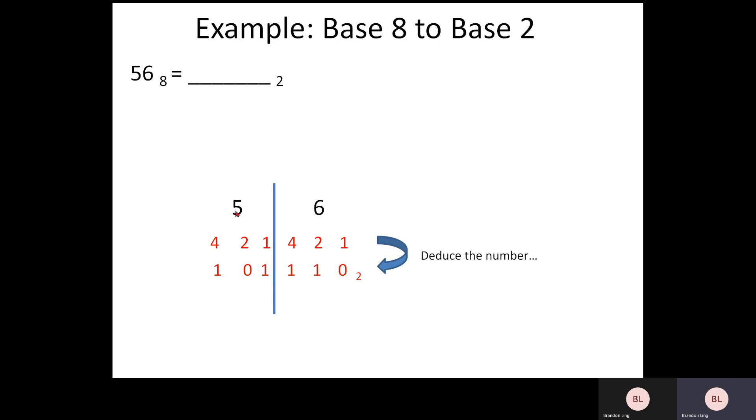And for the digit 5, what constitutes a 5, you use 4 plus 1 equals 5. And so, therefore, below 4 and 1, you put a 1 and 1 with 0 below 2. So, therefore, you have this series of numbers, 1, 0, 1, 1, 1, 0.